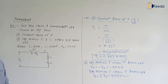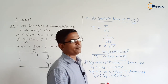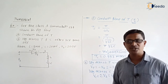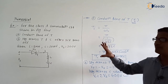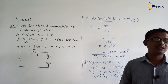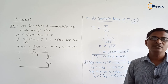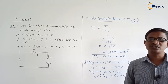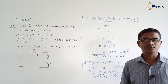This is the numerical based on class A commutation — a very simple example, but you need to understand class A commutation well. In the next video, we are going to discuss class B commutation. Thank you.